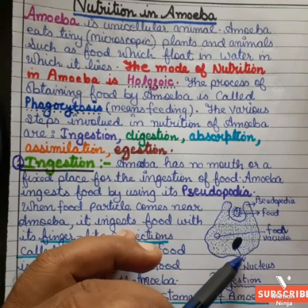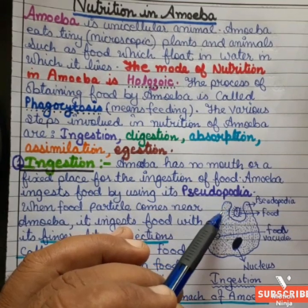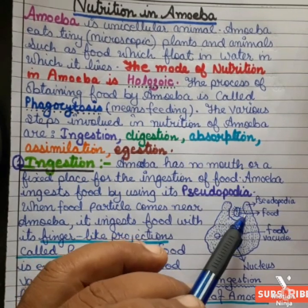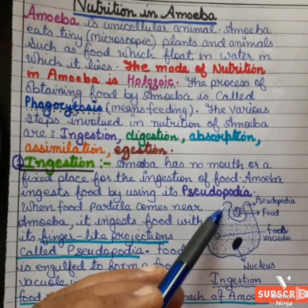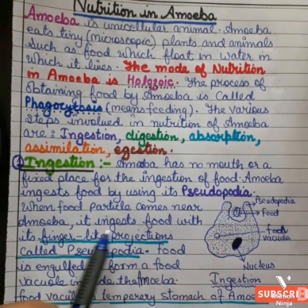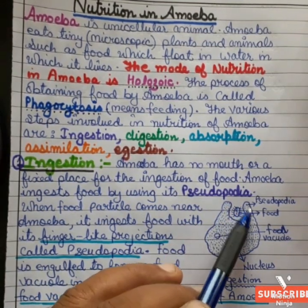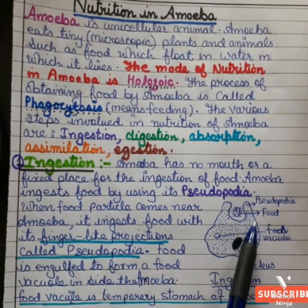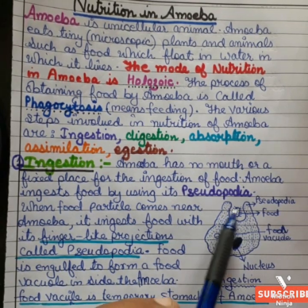These are the pseudopodia — the locomotory organs of amoeba. When a food particle comes very near to the amoeba, the pseudopodia engulf the food. Pseudopodia are finger-like projections, and food is engulfed into a food vacuole inside the amoeba.